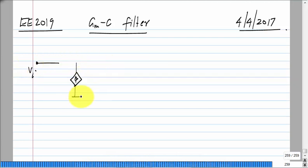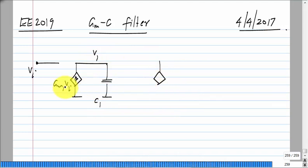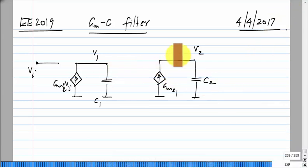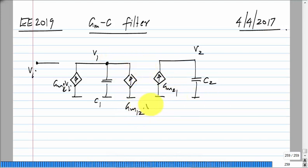We have Vi and we can call this GMi times Vi. This current is driven into a capacitor C1 — call this node V1. If I call this GM21, it takes you from node 1 to node 2, with capacitor C2 and voltage V2. Right now we just have two integrators one after another — a GM loaded by a capacitor is an integrator. What we need for a filter is feedback: the second integrator's output voltage V2 must influence the current in the first integrator via GM12.